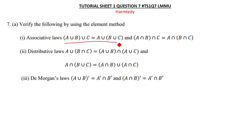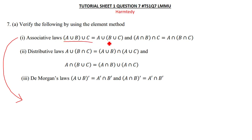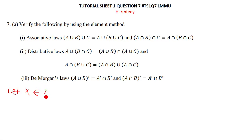Starting with the first question — we have to prove the associative law, meaning this side is equal to that side. So we let the element x be a member of A union B, and then this same element let it also be a member of C.